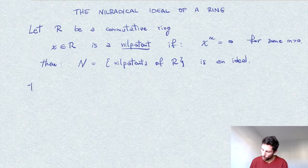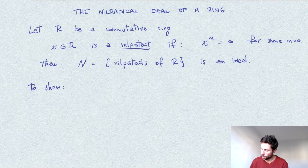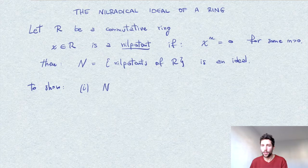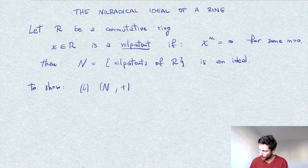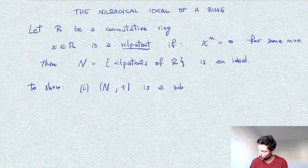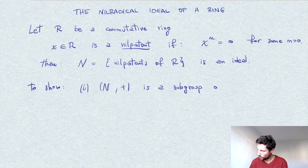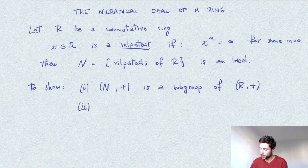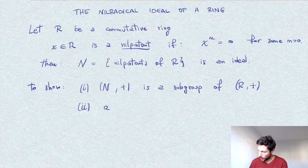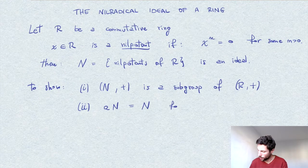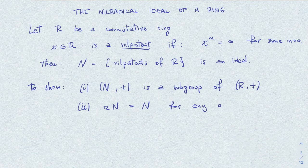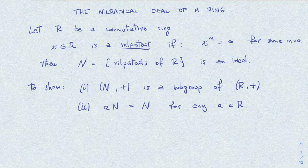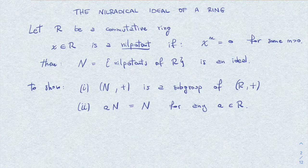What we have to show is two things. First, that N is an additive subgroup, so (N,+) is a subgroup of R with respect to addition. Second, the property that a times N equals N for any a in the ring. The interesting thing is we will use the commutativity of R for both assertions.